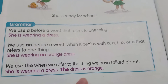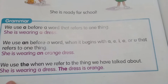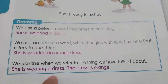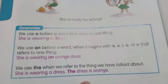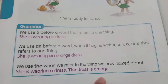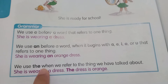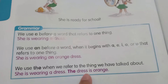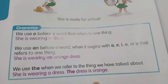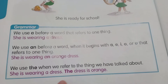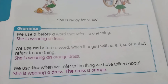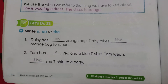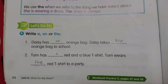She is wearing a dress — the dress is orange. So we use 'the' when we refer to the thing that we have already talked about. So this one: the dress is orange. Now, Part B — write a, an, or the.